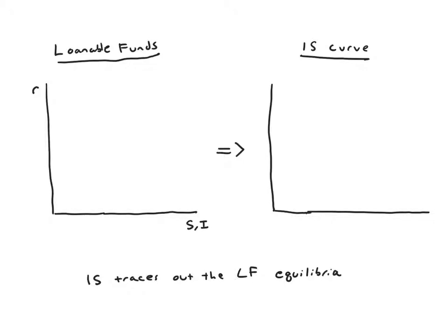On the left we have loanable funds — that's our starting point and building block. We draw in a level of saving and some investment, and they intersect at point A, giving us the equilibrium real interest rate. Now we want to think about what implications these loanable funds equilibria have for the relationship between R and Y plotted on the right. Our goal is to get points A, B, and C on the right, connect the dots, and see that the IS curve slopes down — a conclusion we already had from the IS equation, but now confirmed geometrically.